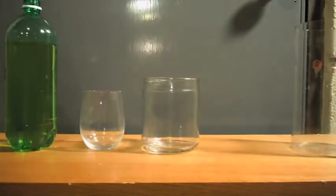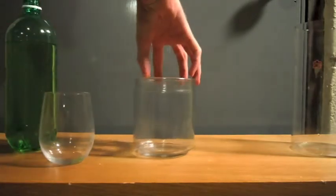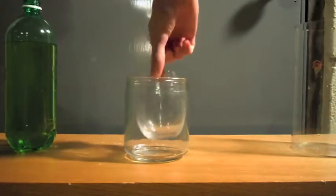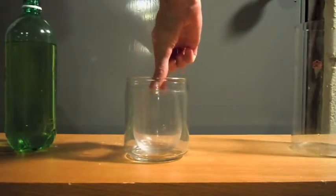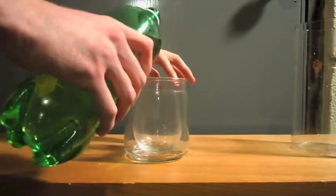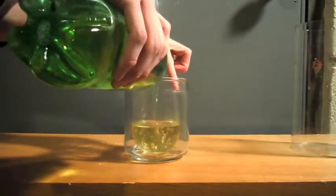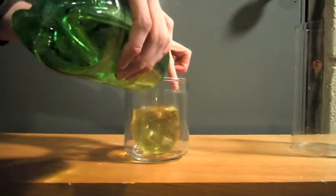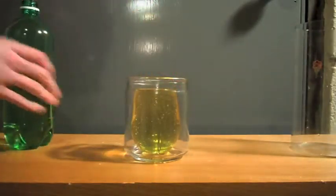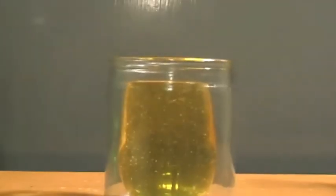So using refraction I'm going to make this glass right here disappear. First let me place the glass inside of the jar. Now I'm going to fill that glass with the sunflower seed oil. Now you can see better that there actually is a glass here. It's pretty clear that there is something in there.